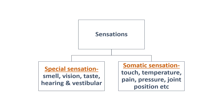Sensations are broadly categorized into spatial and somatic sensation. I have already explained spatial sensation in the cranial nerve examination, so not going into detail today. I will cover somatic sensation today, in which touch, temperature, pain, pressure, and position will be covered.